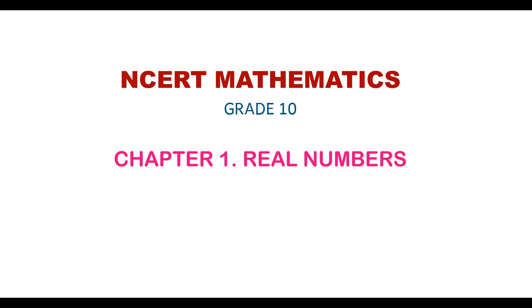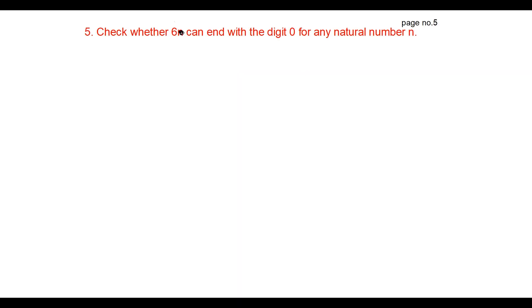In this video we will see NCERT mathematics for grade 10, first chapter Real Numbers, Exercise 1.1, 5th problem: Check whether 6^n can end with the digit 0 for any natural number n.